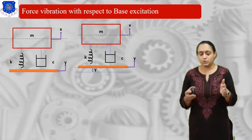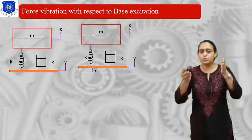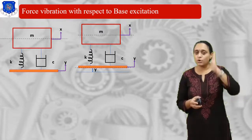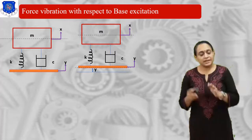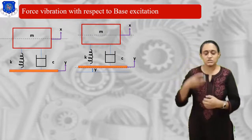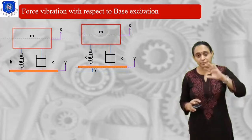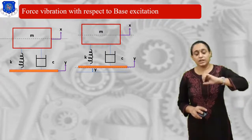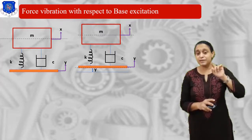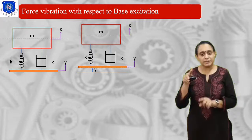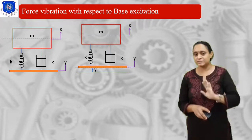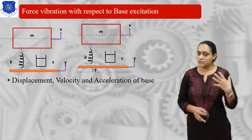If we look at this diagram, suppose this is the mass and we move it upward. The spring is rigidly fixed to the mass, so the spring will also move with the mass and elongate. The damper is also fixed to the mass, so it will also stretch. Because both are connected to the base and by its reaction, the base will also move upward. Therefore, the elongation of the spring will not be exactly x; it will be x minus y. The elongation of the damper will also be reduced, so the total displacement is reduced by x minus y, and we must write the equation differently.